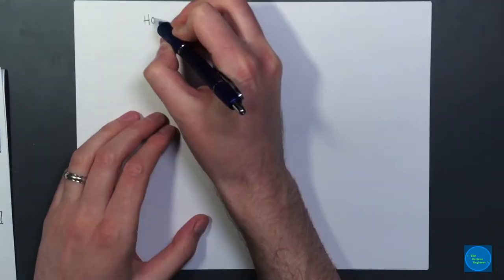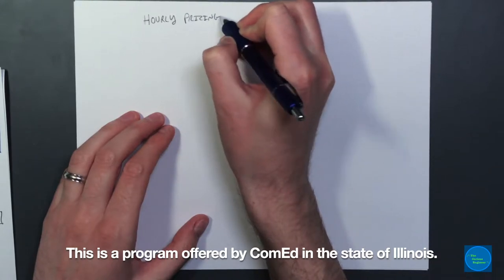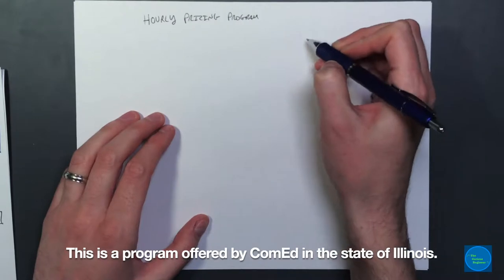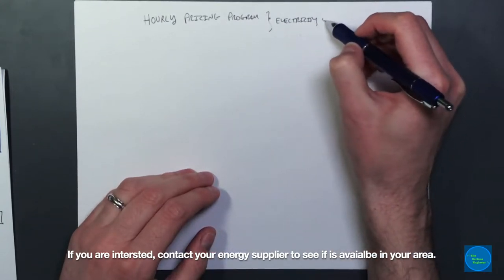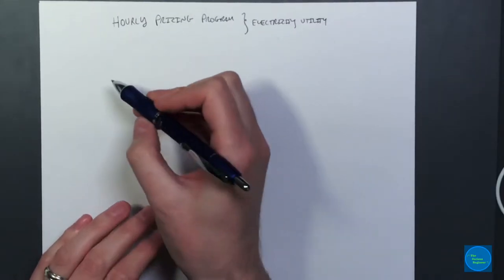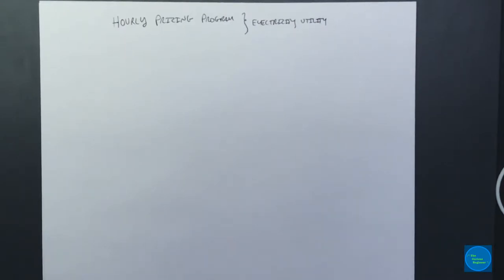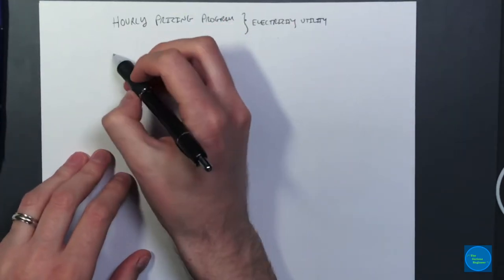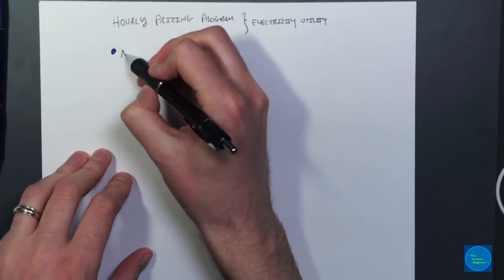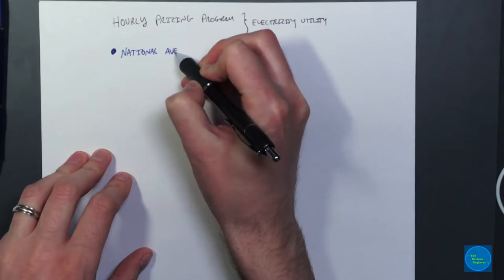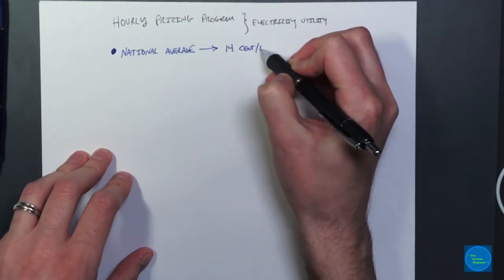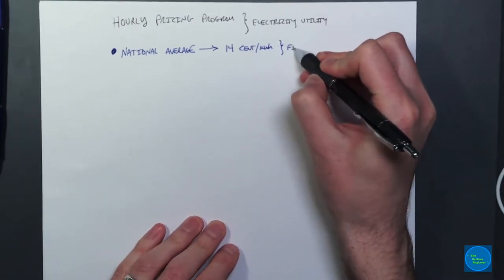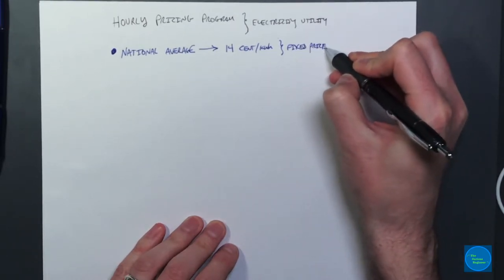I'm actually really excited because what I want to talk about is the hourly pricing program. This is specifically for electricity pricing, so it's for your electricity utility. Most of the United States uses a fixed price per kilowatt hour of service, and there's a national average that fluctuates, actually around 14 cents per kilowatt hour if you use fixed price programs.